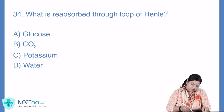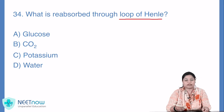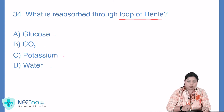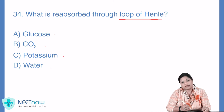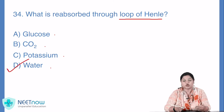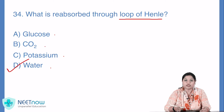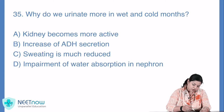Question number 34: what is reabsorbed through the loop of Henle? Options: glucose, carbon dioxide, potassium, or water. Jaahan tak hum baat karein Henle's loop ki, wahan par reabsorption hota hai water ka. Jitna bhi excess hota hai woh wahan par reabsorbed hota hai. So option D aapka yahan sahi hai.